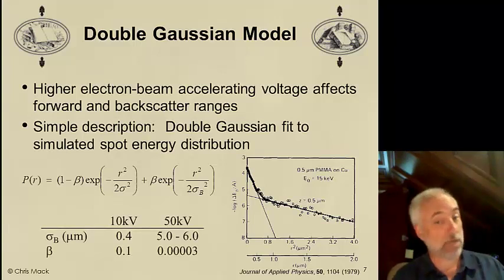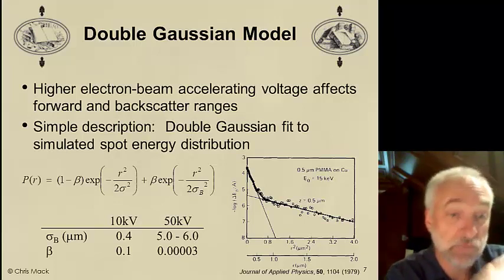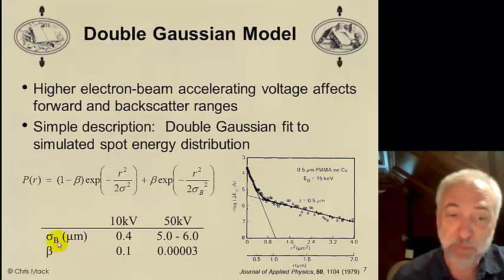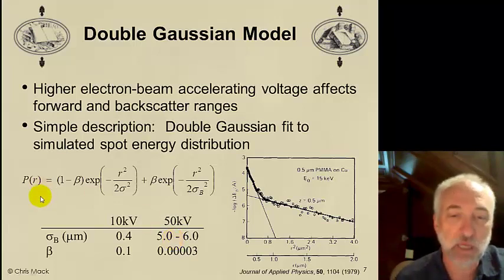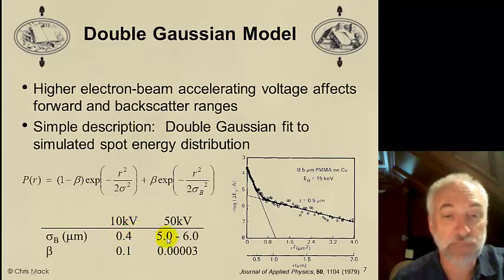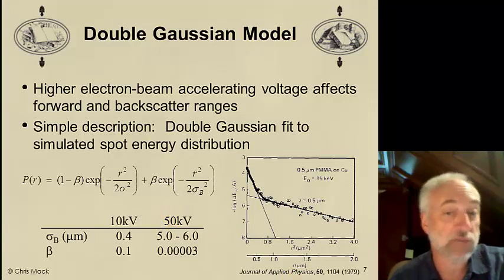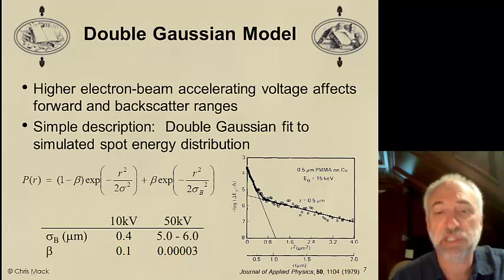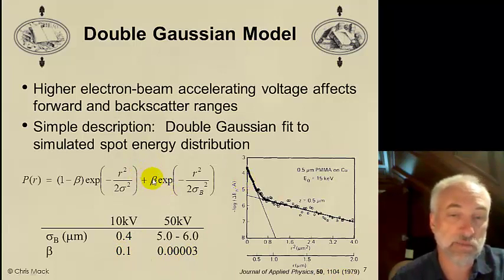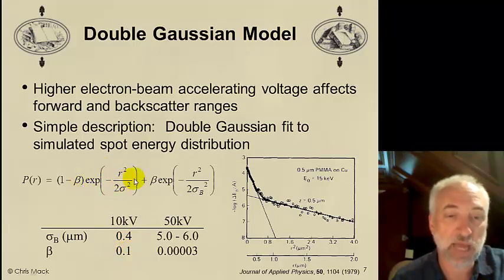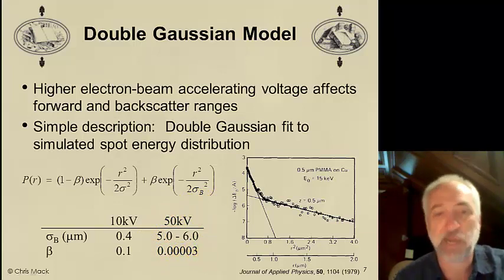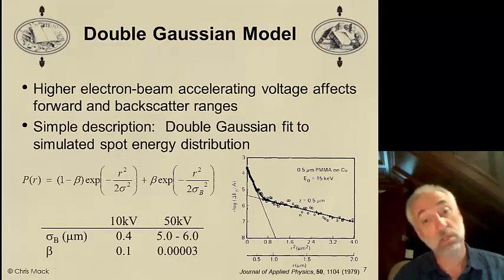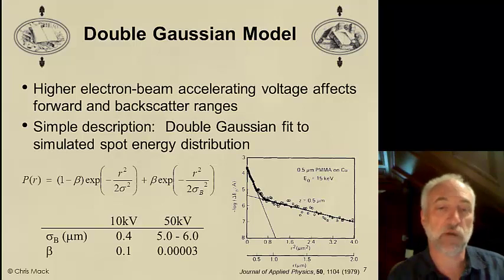We can look at the impact of electron energy — for example, 10 kV versus 50 kV accelerating voltages. Note the big difference in backscattering range: 0.4 microns at 10 kV for a particular substrate, but 5 or 6 microns for 50 kV — more than a factor of 10 difference. We also see a big difference in the percentage of energy in backscattering: about 10% of the electrons are backscattered in the 10 kV case, and a very small fraction (0.0003) are backscattered for 50 kV. So smaller fraction, but spread over a longer distance for high energy electrons.